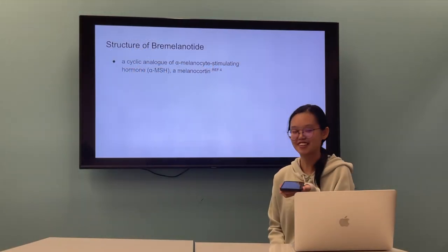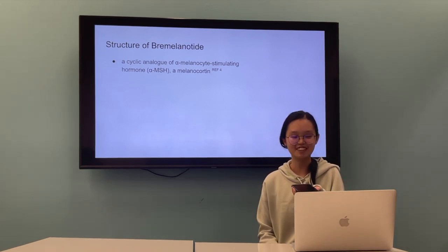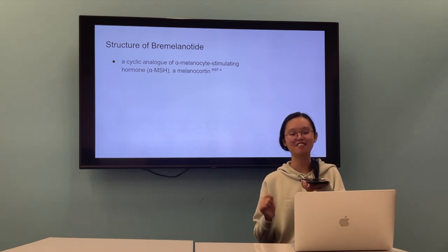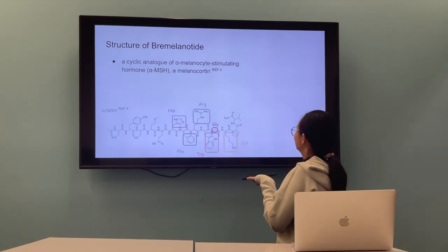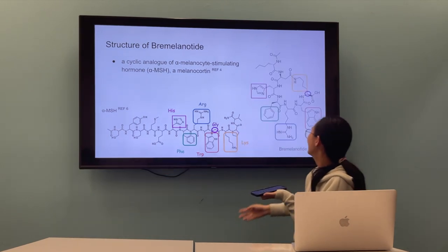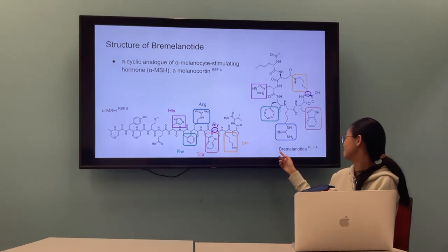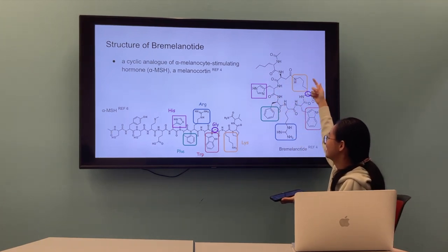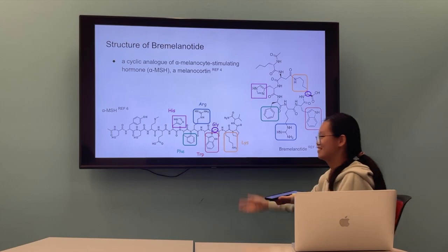So let's get into the structure of bremelanotide. It's a cyclic analog of alpha-melanocyte-stimulating hormone, a melanocortin. Here you can see this is alpha-MSH, and on the right-hand side, you have bremelanotide. And you can see this is a cyclic molecule. On the other hand, you have a peptide.